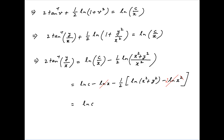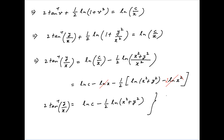Therefore the right hand side simplifies to ln of c minus half of ln of x squared plus y squared. This is equal to the left hand side, which is 2 times tan inverse y upon x, and this is the required solution.